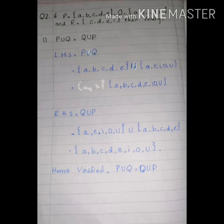Part number 1 is: P union Q equals Q union P. We have to show both sides are equal. We will first solve the left-hand side.